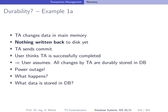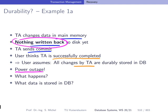Let's walk through some simple examples to show how relative durability is. Say a transaction changed data in memory, nothing yet written to disk. The transaction sends commit, and the user or application assumes the transaction was successfully completed and all changes are durably stored. Then a power outage occurs, memory is gone, and nothing was written to disk. Once the database restarts, no change is stored on disk — durability is not assured.